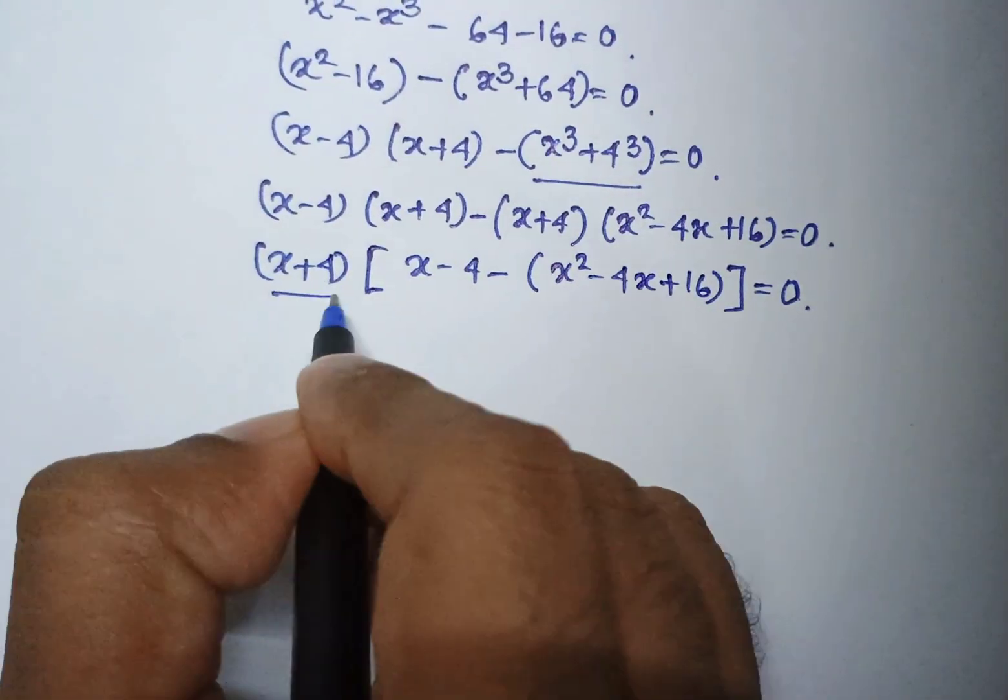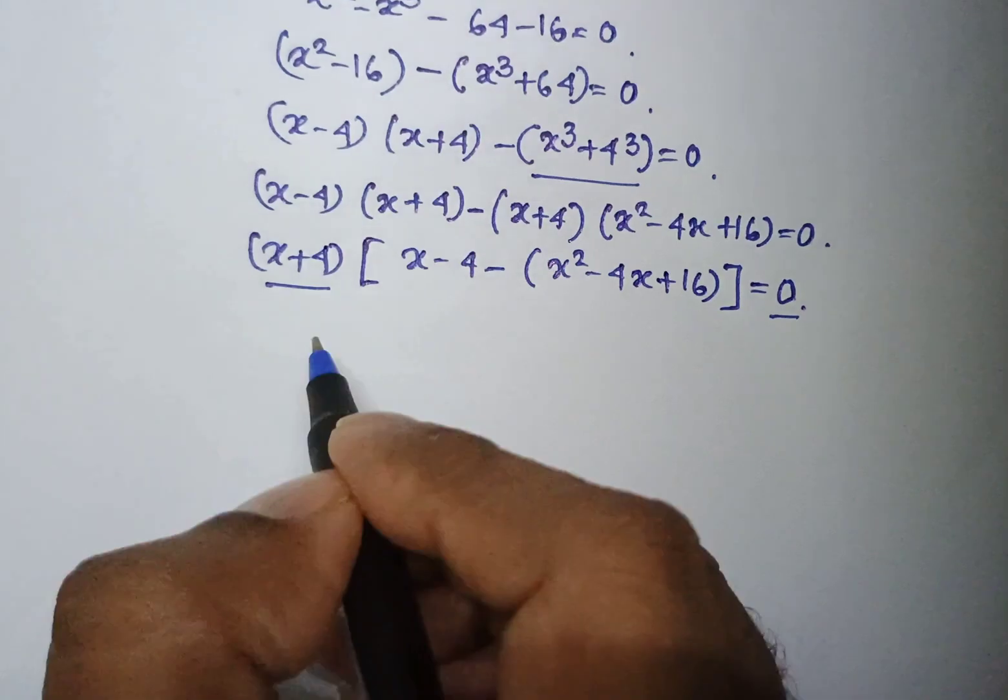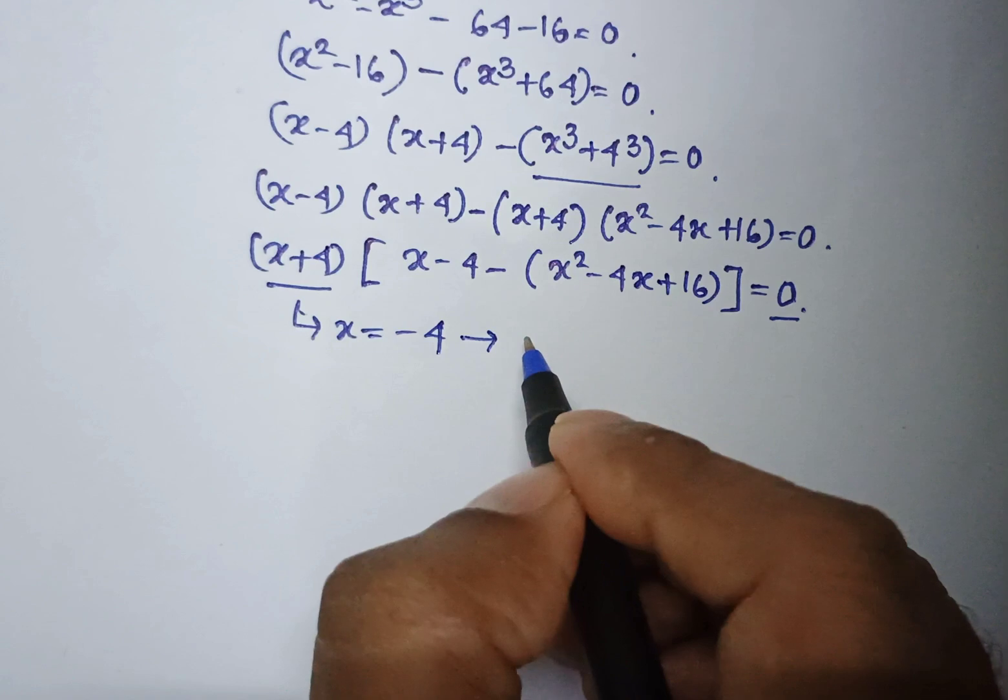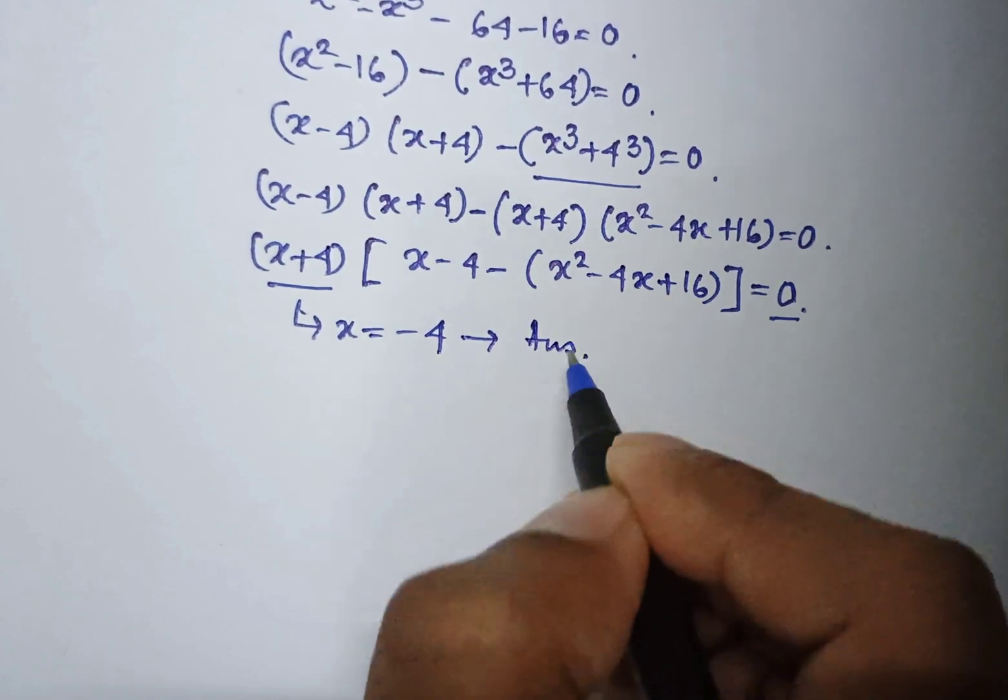So, x plus 4 if that is equal to 0 then x equal to minus 4 is an obvious real solution for this particular equation.